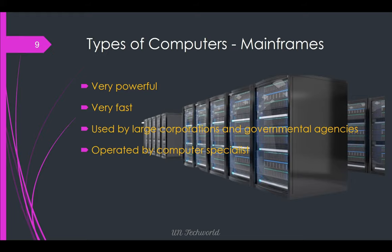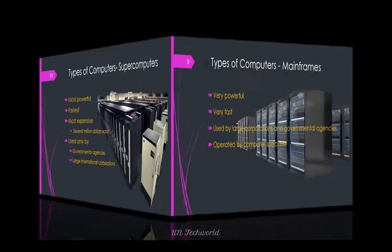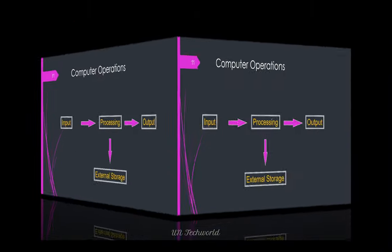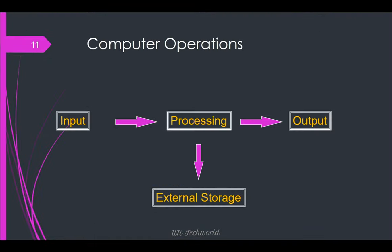The picture shows the mainframe computers, located in big corporations and government agencies. In supercomputers, it is the most powerful and fastest computer, most expensive — several million dollars for each supercomputer — used only by government agencies and large international corporations for their business purposes.